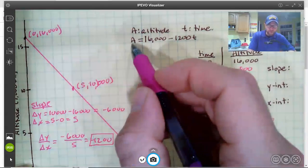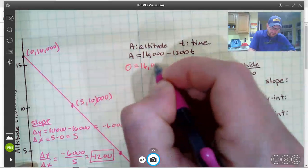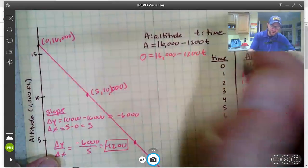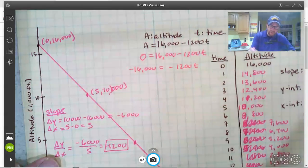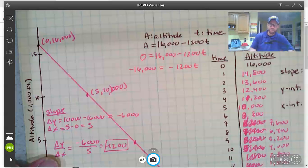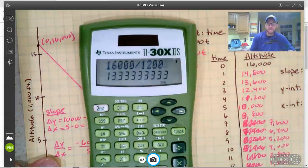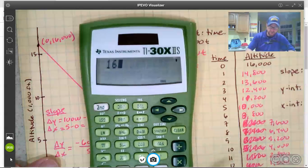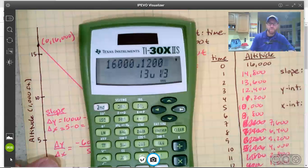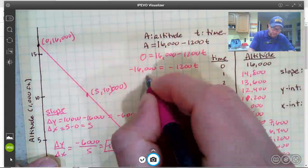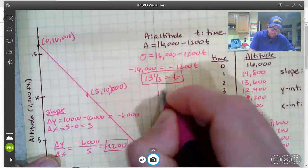So now what we have to do is plug in an altitude and our altitude that we're interested in is zero. So zero equals 16,000 minus 1,200 T. So I'm going to subtract 16,000 from each side, then I'll just divide both sides by 1,200. And if I go 16,000 divided by 1,200, I get this decimal. I don't want to deal with the decimal. So instead I'm going to use the ABC button to write this as a fraction. It's going to be 13 and one third.